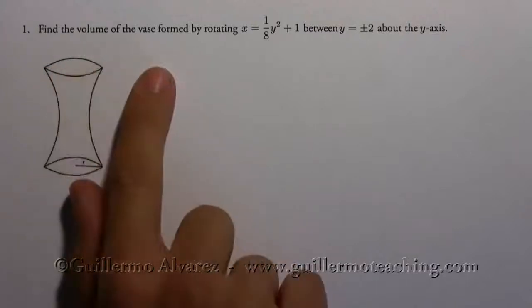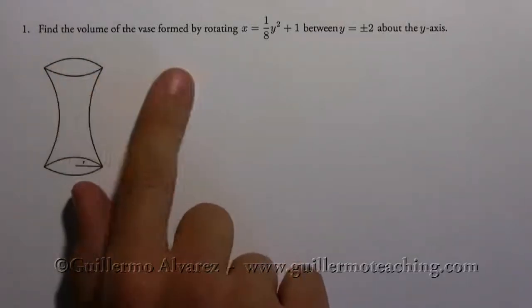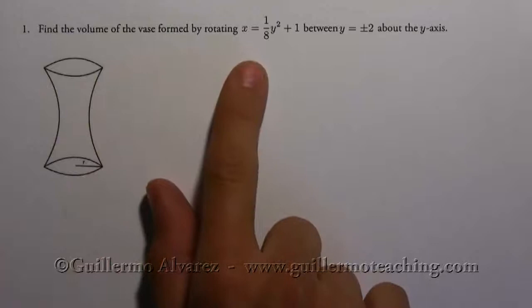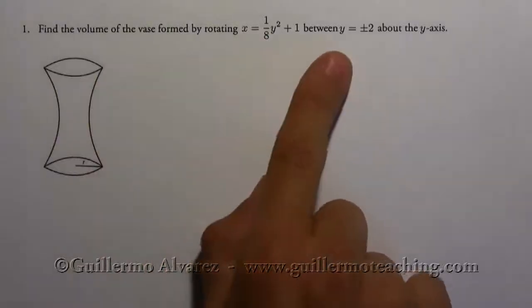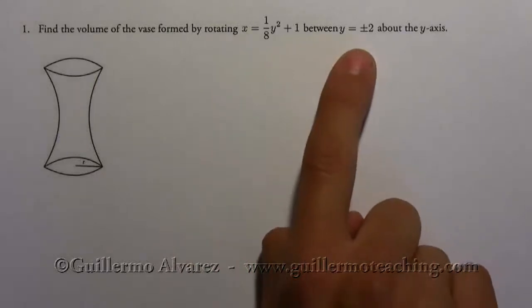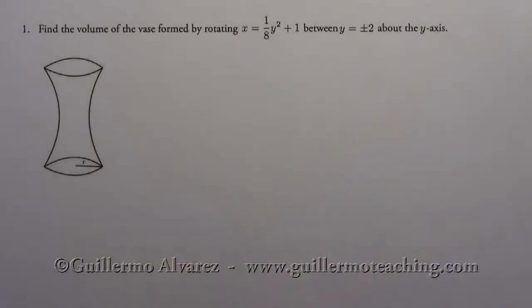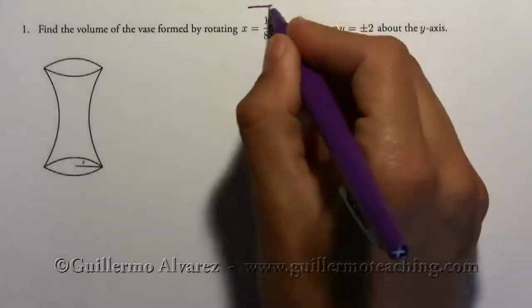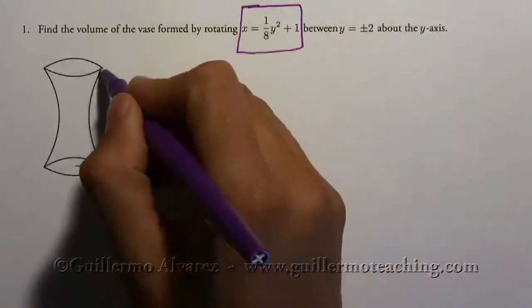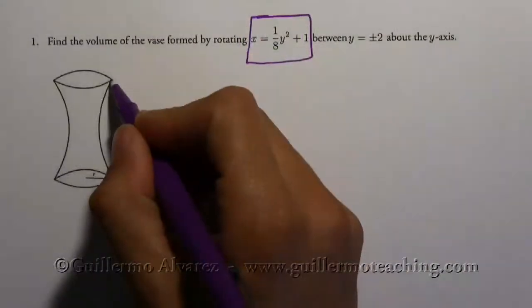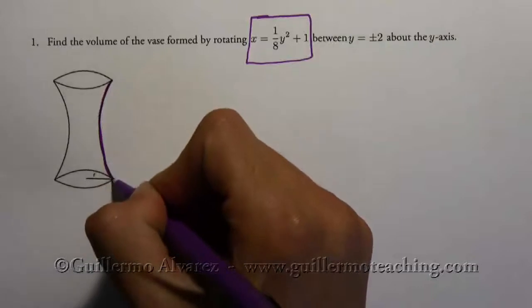But it says find the volume of the vase formed by rotating this equation, x equals one eighth y squared plus one, between y equals plus or minus two, about the y-axis. So this is what's going on, is that this equation is this line right here.